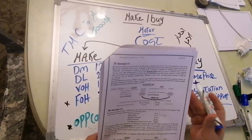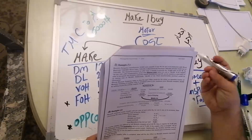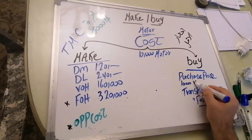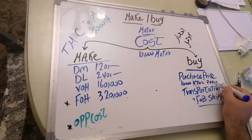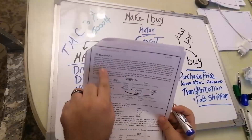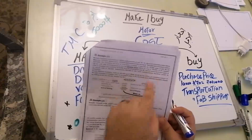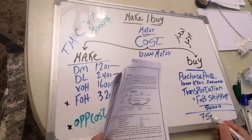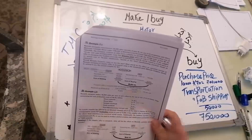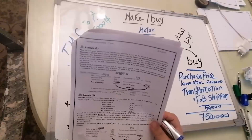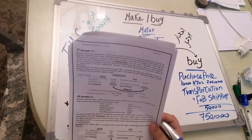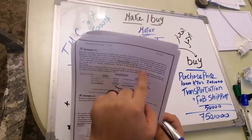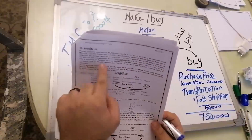The company received an offer from a supplier: 10,000 units of the motor part at 70 per unit — that's a total purchase cost of 700,000. Transportation terms are FOB shipping, meaning shipping is the buyer's responsibility, adding 50,000. So the buy side total so far is 750,000. The facility currently used to manufacture part M1 could be rented to a third party for 80,000.